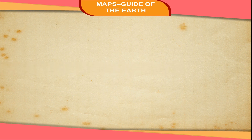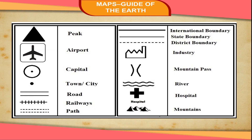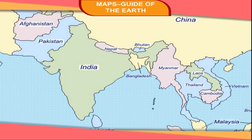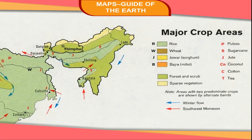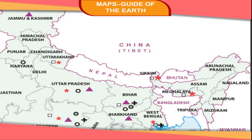Various signs and symbols on a map stand for various things. For example, the boundary of a country is shown by a line made up of dots and dashes. Similarly, a district is shown by a line made up of dashes. One must know about these signs to read the map correctly. Special symbols are also used to show distribution of crops, minerals, industries, dams, etc. Some of the important symbols are shown here.